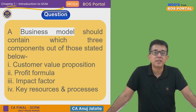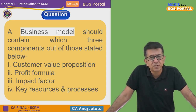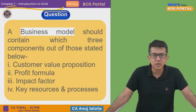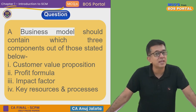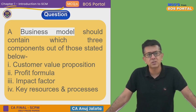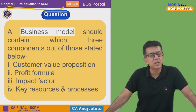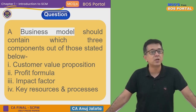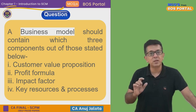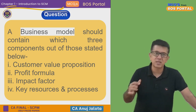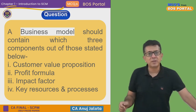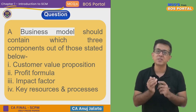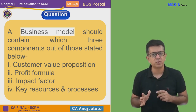Second, profit formula — how you are going to get the profit, which should be the net of revenue minus your cost. Third, impact factor — how you will create an impact depends upon your strategies. Fourth, key resources and processes — what are your key resources? It could be your staff, the technology you have patented, and what processes will be adopted for making products and so on. A business model is basically about how your business will ultimately become successful.